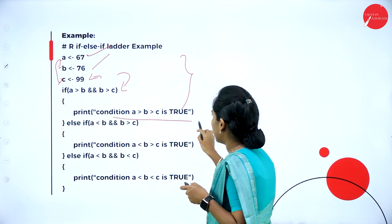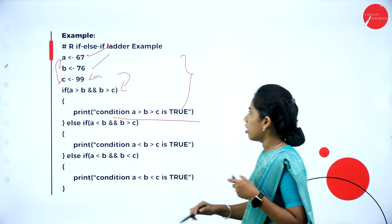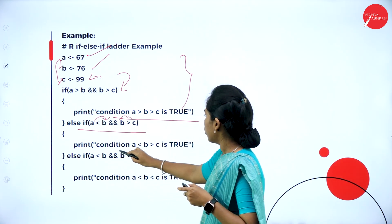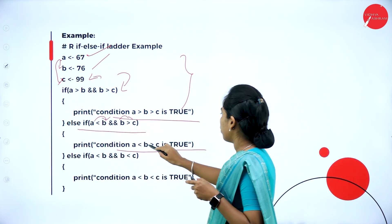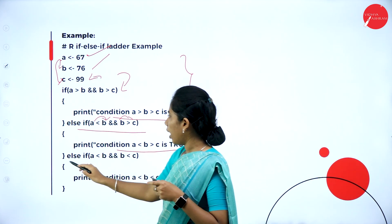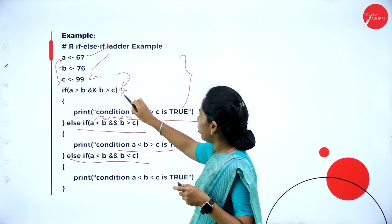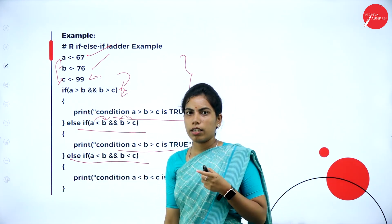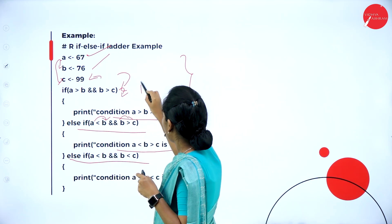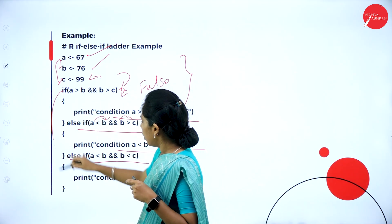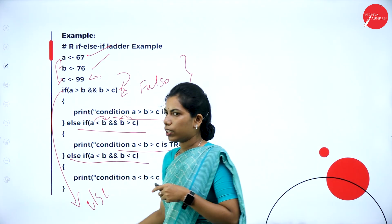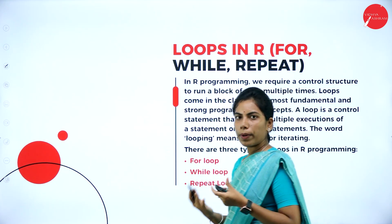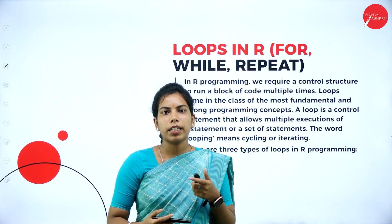Continuing the else-if ladder example: else-if checks if a < b AND b > c, which prints accordingly. Another else-if block executes if its condition is true. If the condition fails, it comes out of the loop and executes the else part. This is how the else-if ladder works.